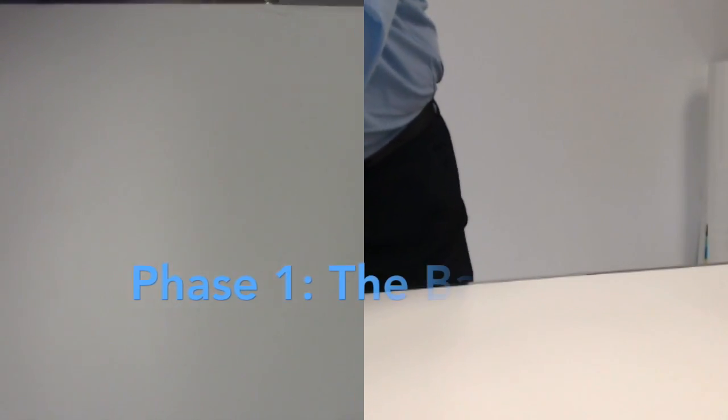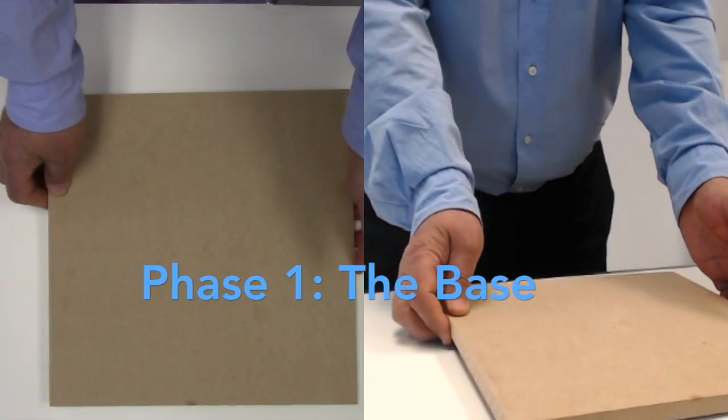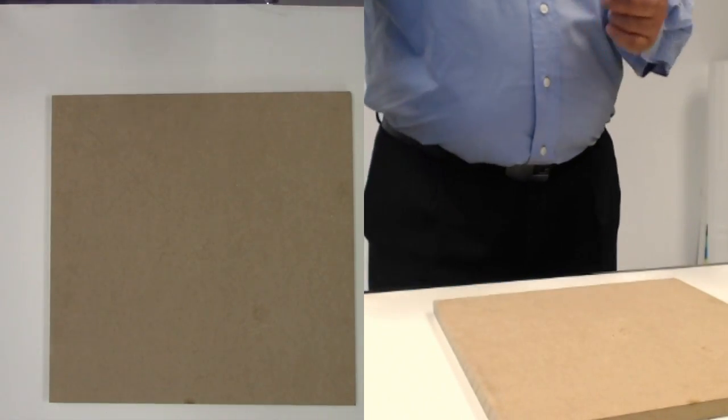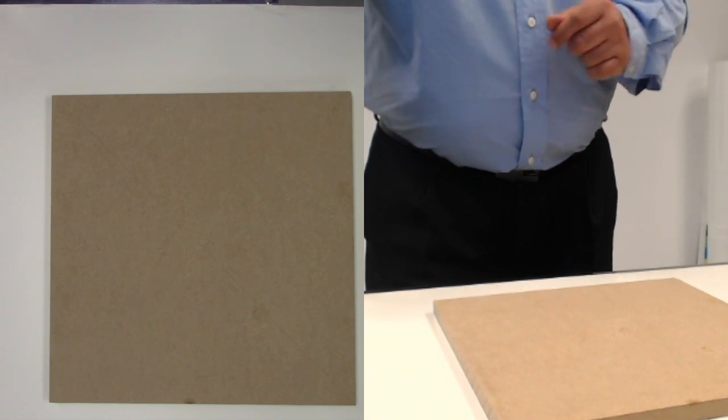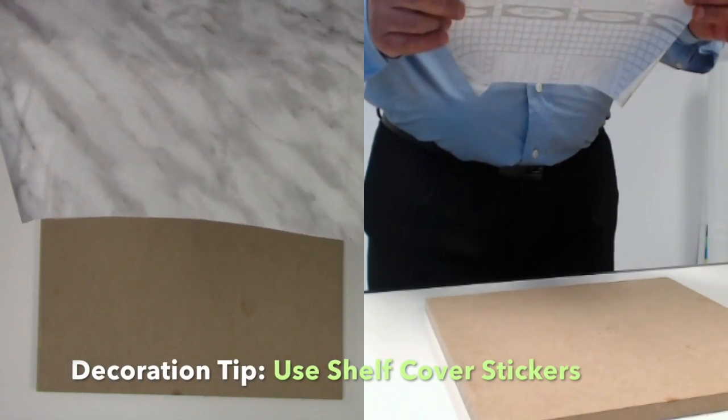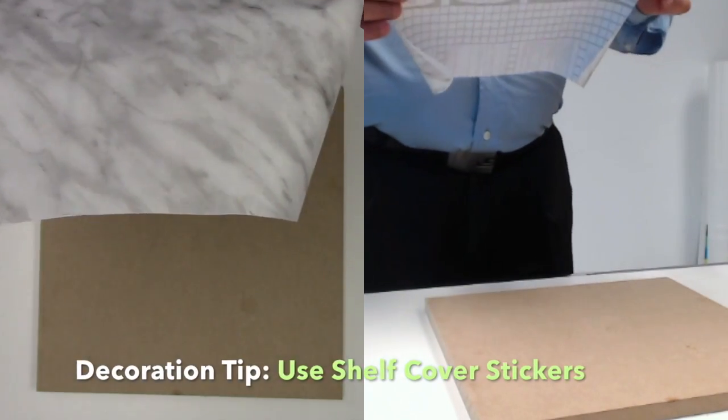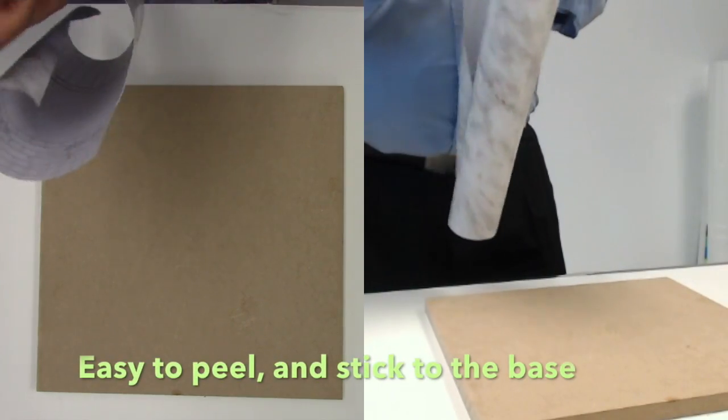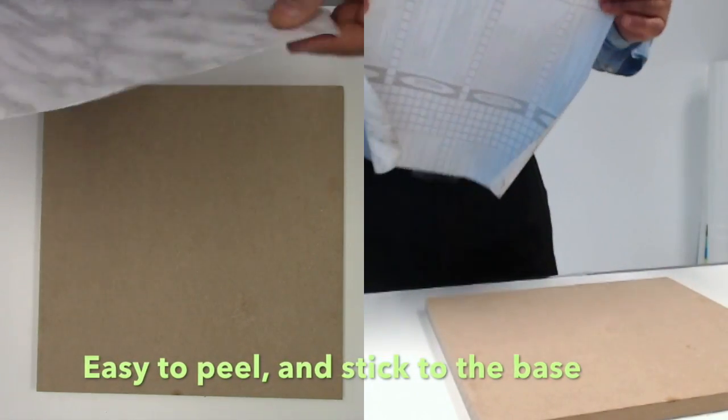The base consists of a board that is 30 by 30 centimeters. For decorations I also chose shelf coverings that come in many different forms and the good thing about them is that you just peel them off and then it sticks to the board nicely.